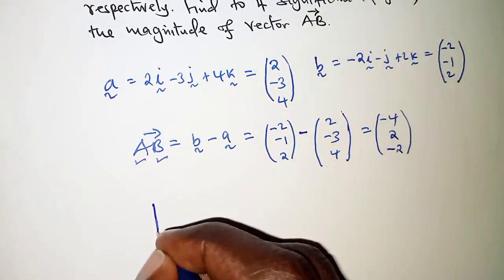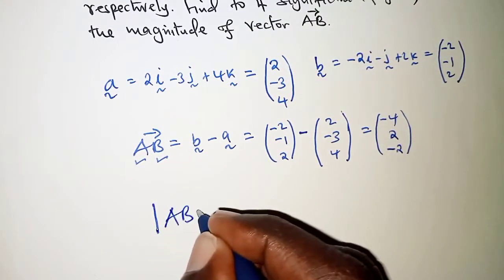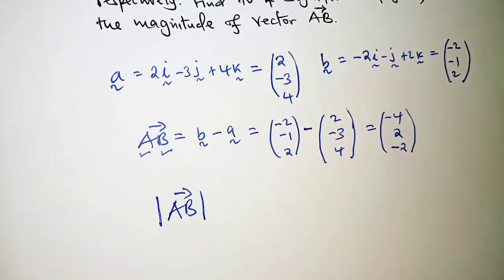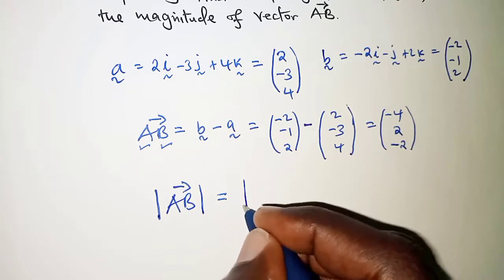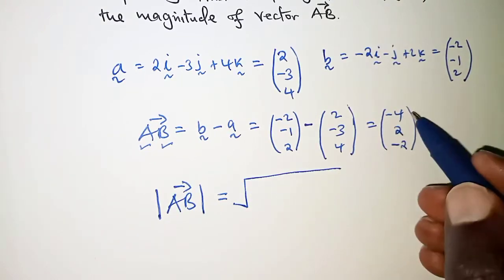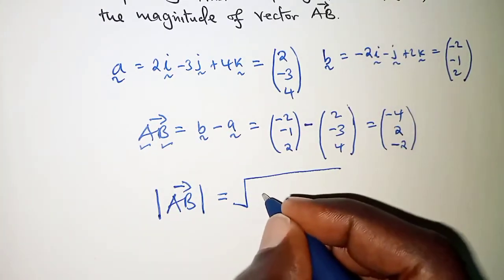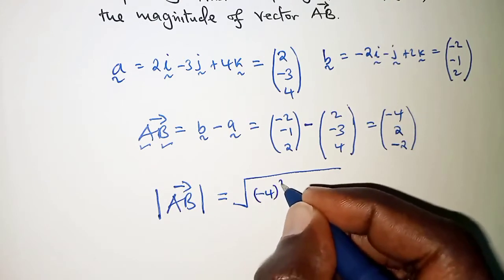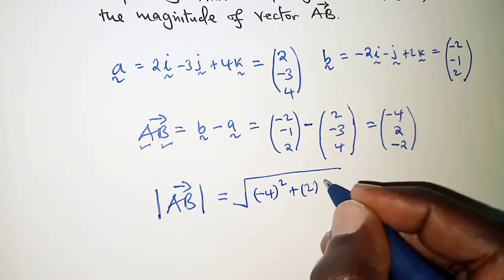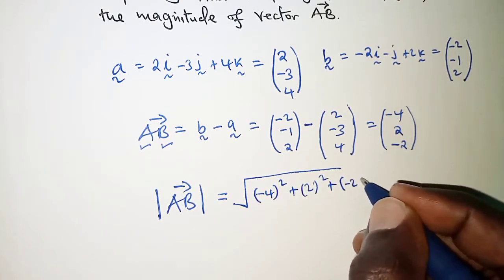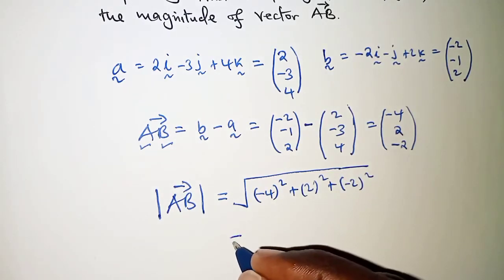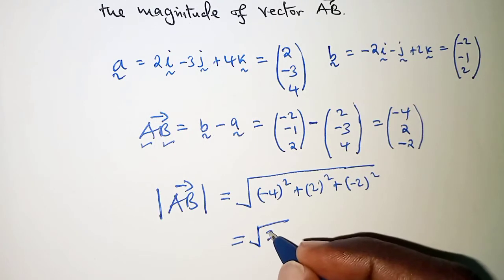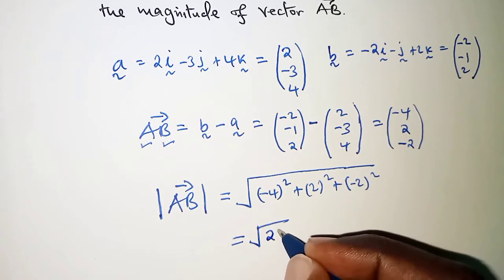Now for the magnitude. The magnitude of AB, or modulus, is the square root of the squares of these elements. We have (-4)² + (2)² + (-2)² = √24.